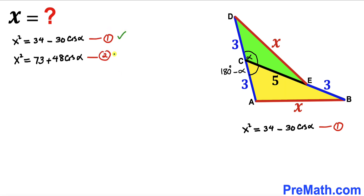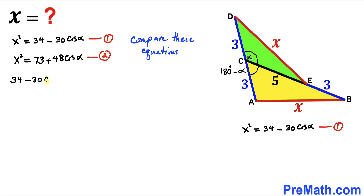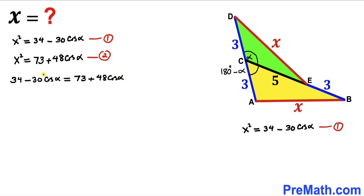We now have two equations. Since both left-hand sides are x², we can equate the right-hand sides: 34 − 30·cos(alpha) = 73 + 48·cos(alpha). Moving 30·cos(alpha) to the right and 73 to the left: 34 − 73 = 48·cos(alpha) + 30·cos(alpha).